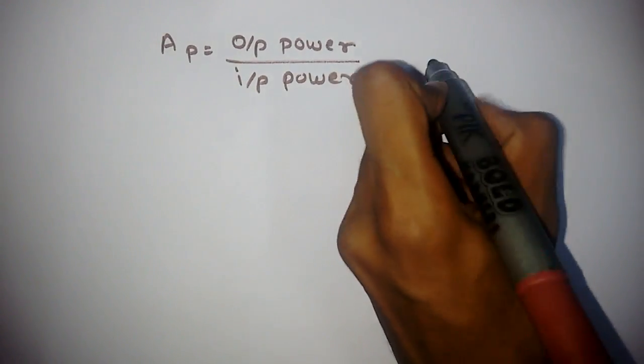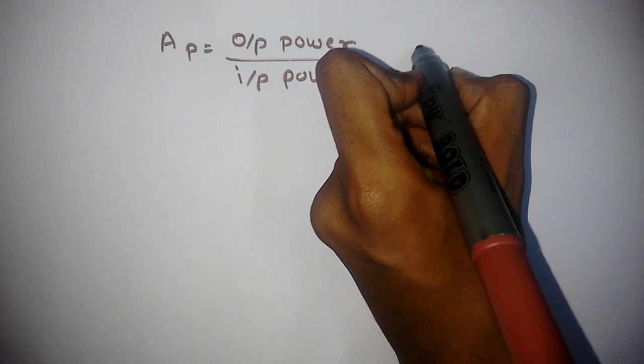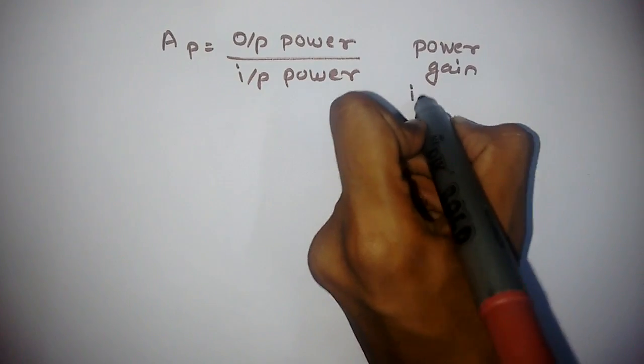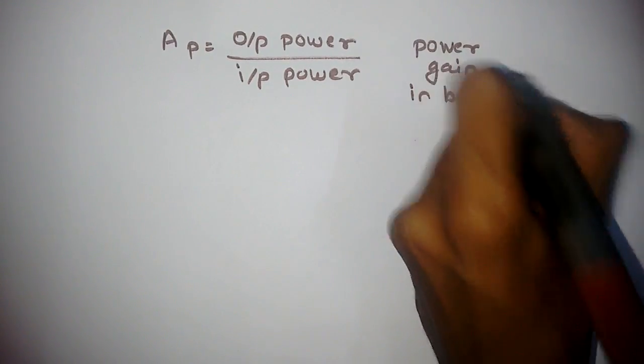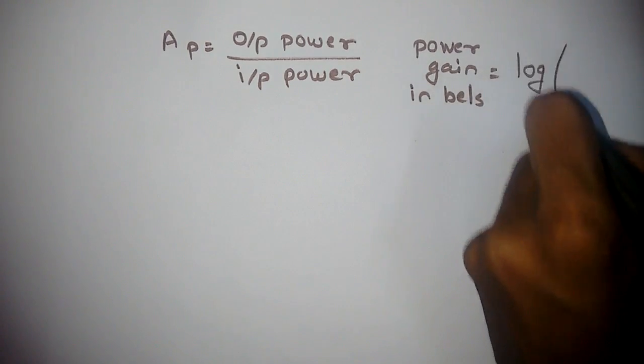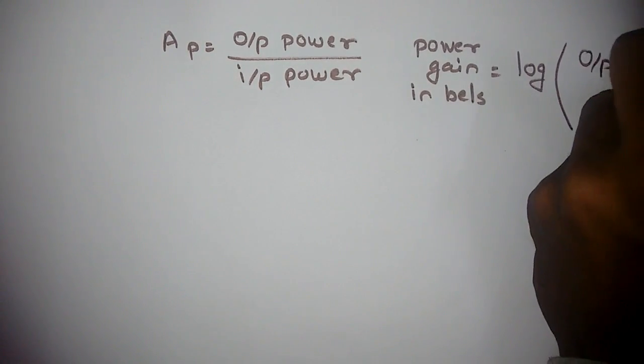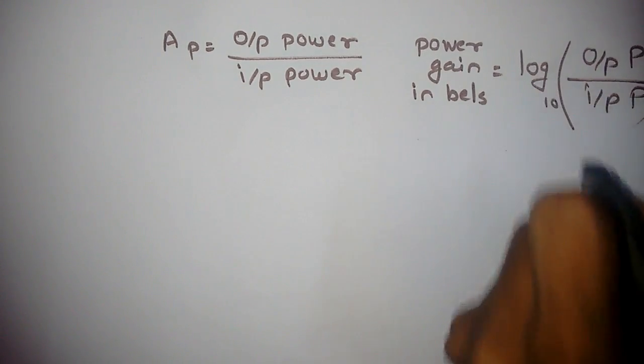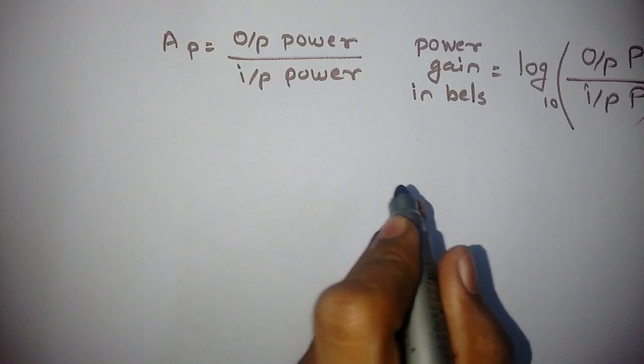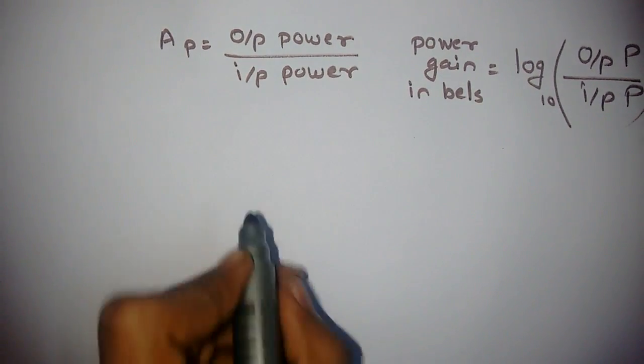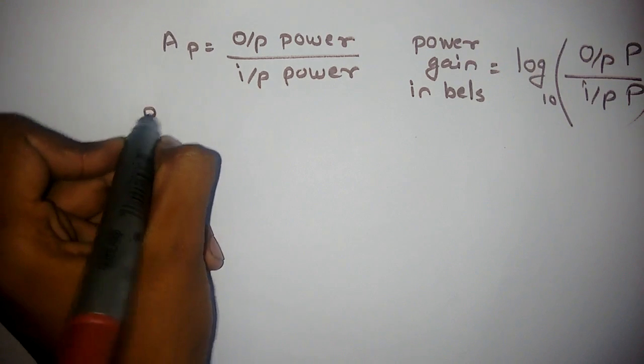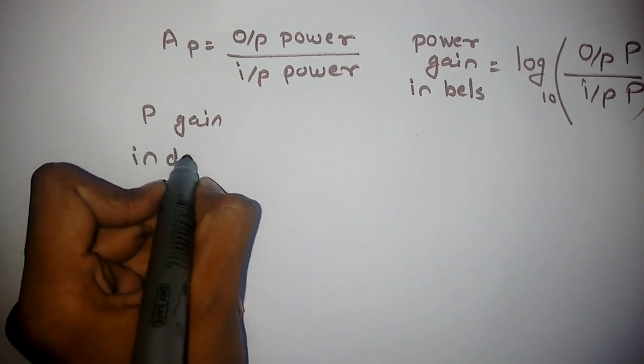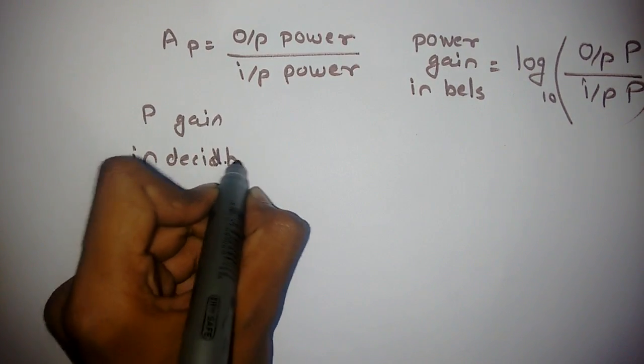In bells, the gain is defined as power gain in bells equal to log of output power upon input power, and the base of log is 10. Now if we want to find the power gain in decibels, then power gain in decibels equals 10 (for deci) log base 10 of output power upon input power.